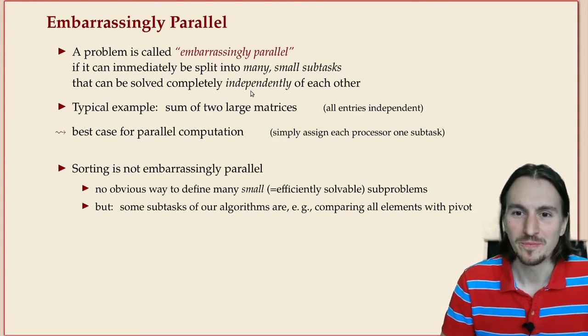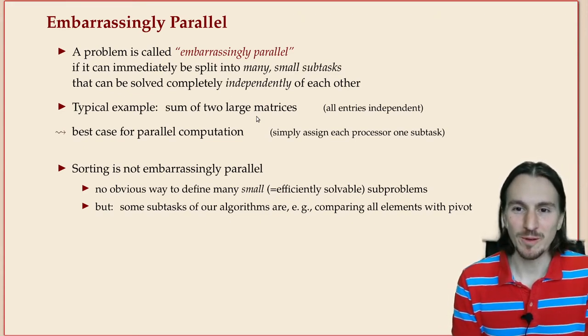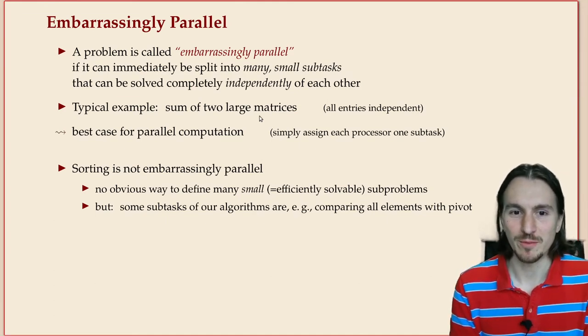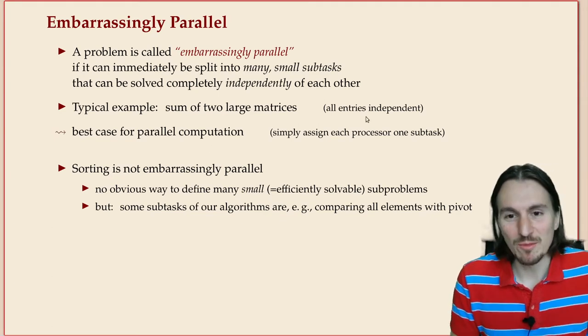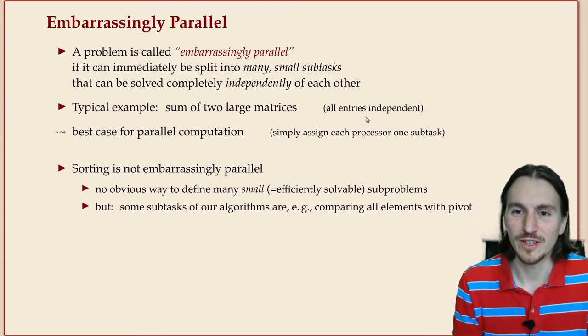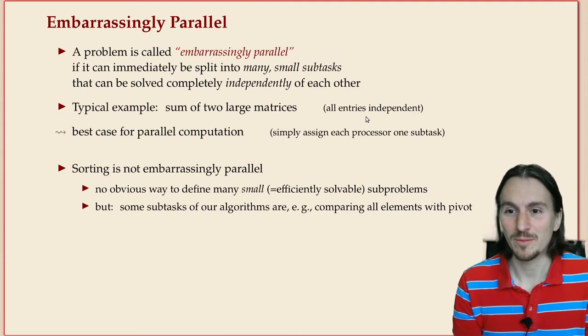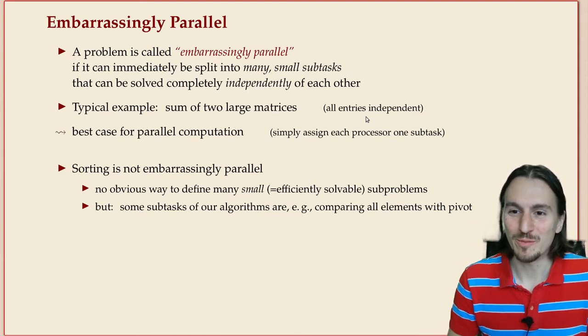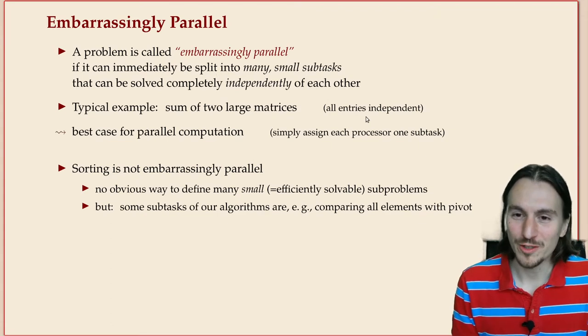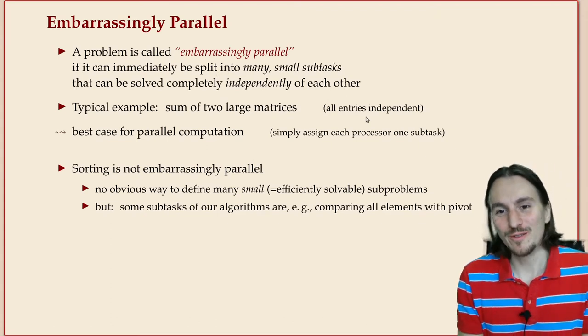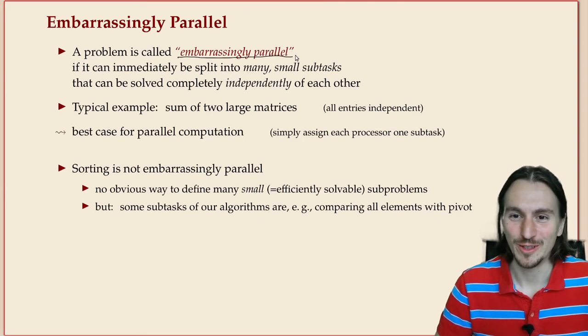A very simple example of an embarrassingly parallel problem is to sum two large matrices of numbers. The sum of a matrix is just the component-by-component sum of all the different entries, so every number in the output can be computed by one processing element by summing up two numbers from the two input matrices. That's constant time, work-efficient parallel algorithm for summing two matrices—completely trivial. That's why people call it embarrassingly parallel; it's so easy to parallelize that you almost feel embarrassed.